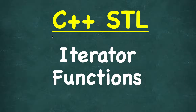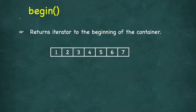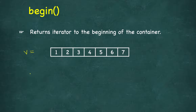In this lesson we will study four important iterator functions defined in the STL. The first one is begin — it returns the iterator to the beginning of the container. If we have a vector v, we call v.begin(), which will return the iterator to the first element of the container.